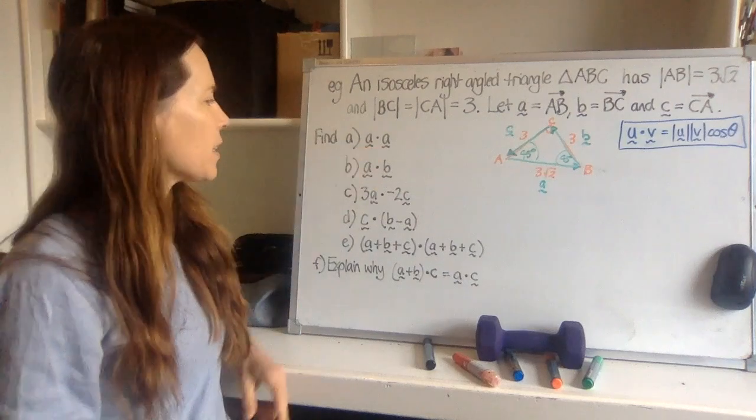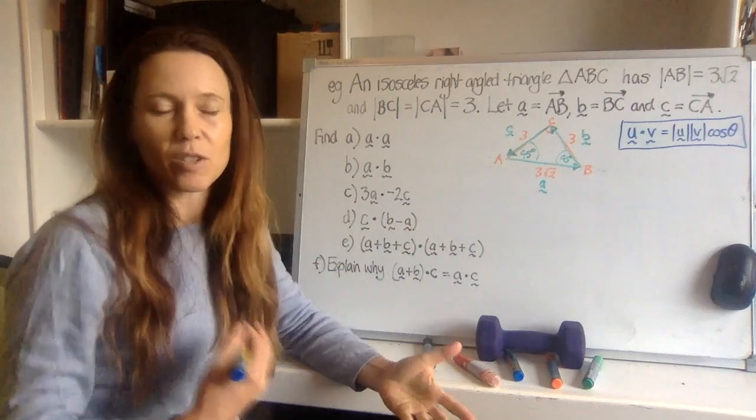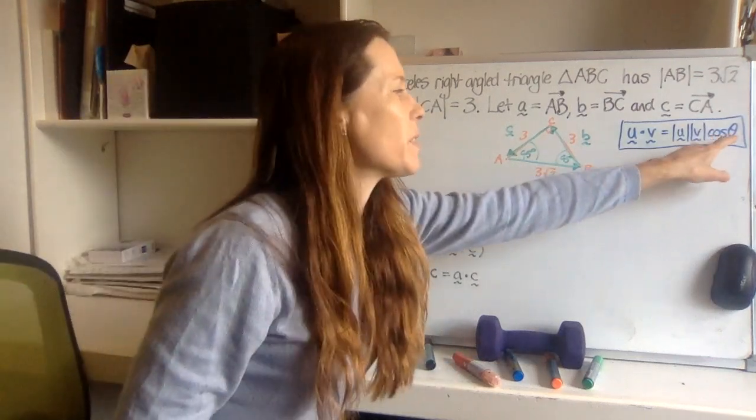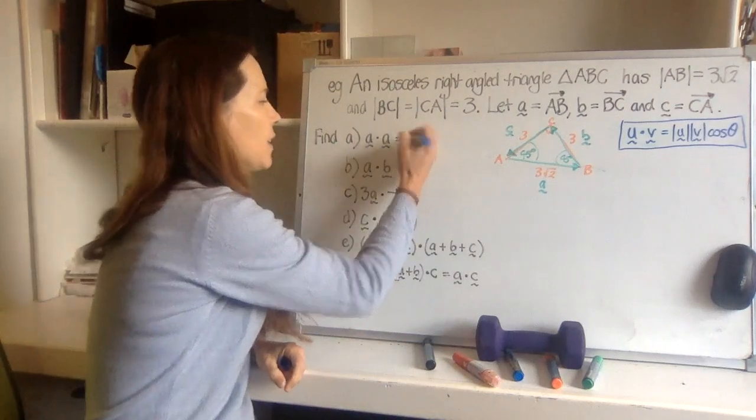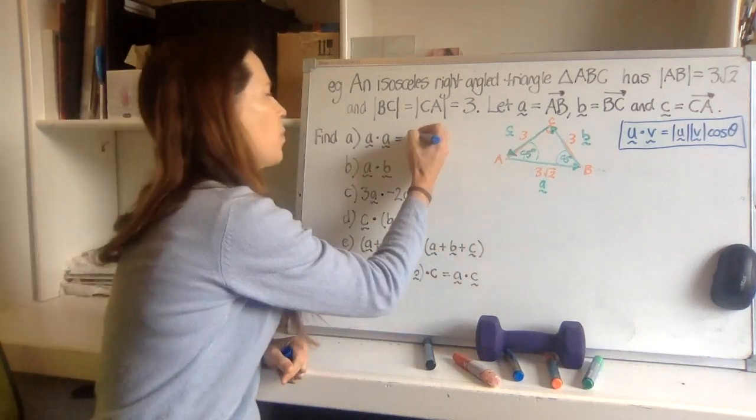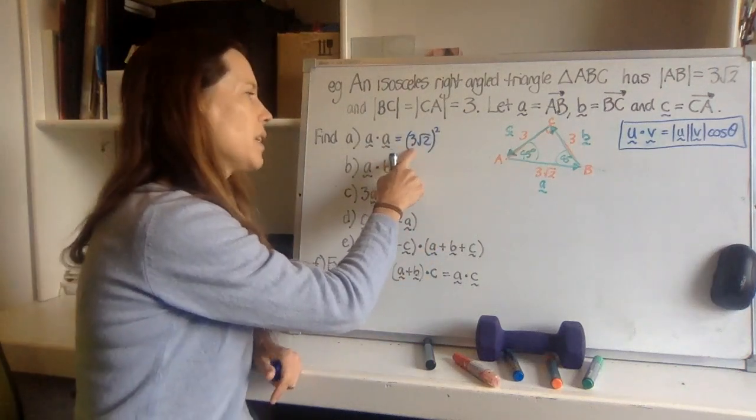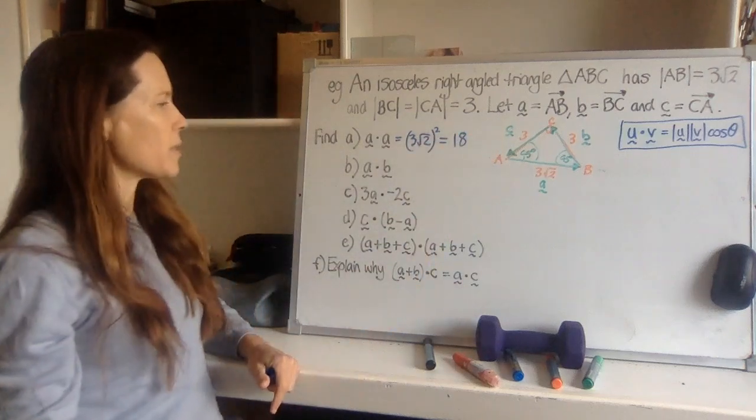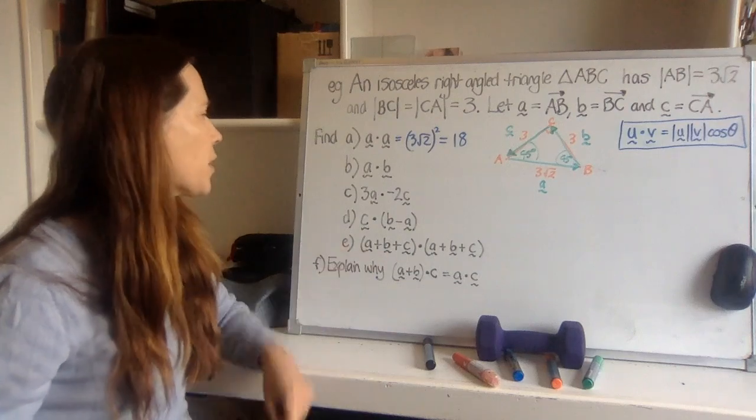So the first one here, we need to do vector A dot vector A. Now vector A dot vector A means two equal vectors. So the angle between them will be zero degrees. So that means the cos of zero is one. So all we really need here is to find the length of vector A, which is 3 root 2, and square it. So we need 3 root 2 squared. 3 squared is 9, and root 2 squared is 2, so we get 18. That one was quite simple.